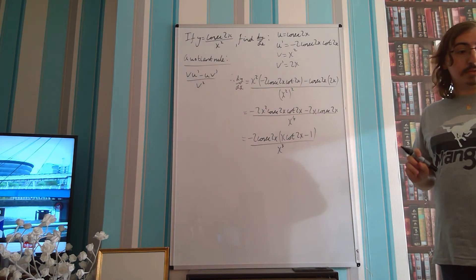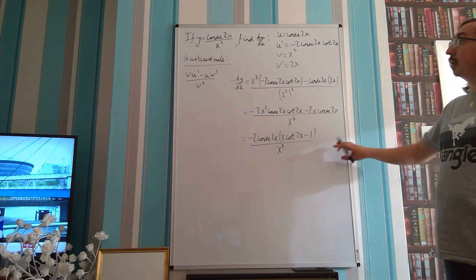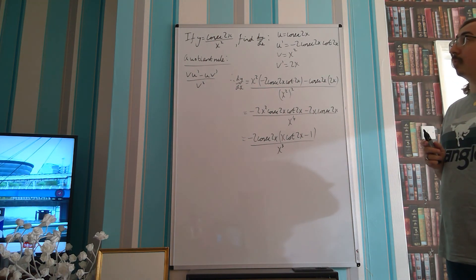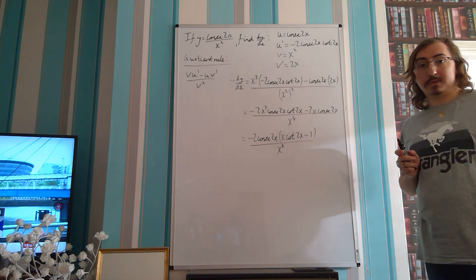And that is our final simplified solution to the differential of y equals cosec 2x over x squared.